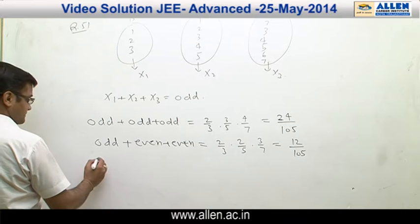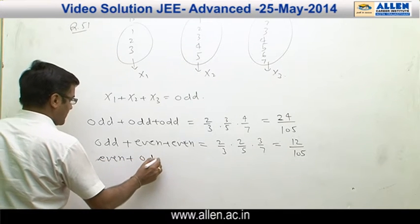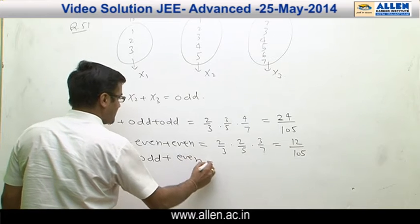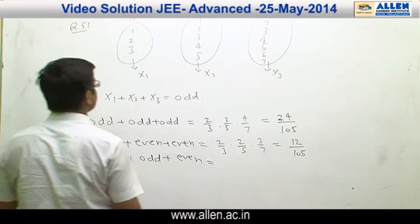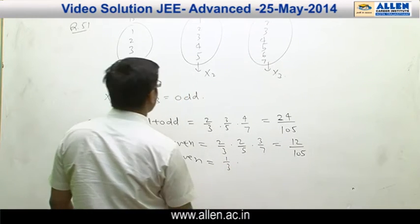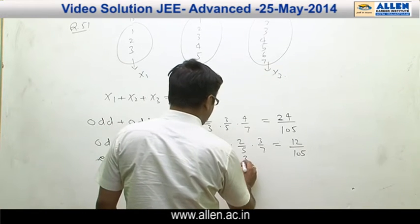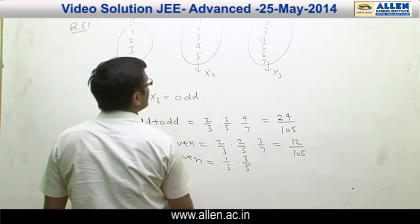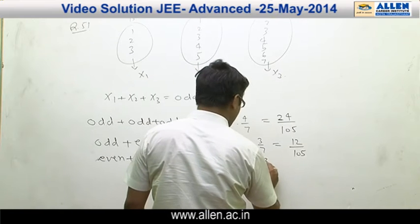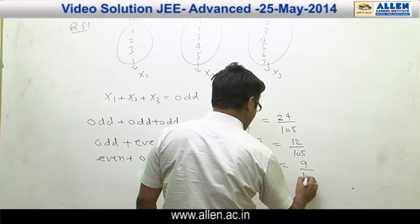Next case: if we pick an even number from box B1, odd from B2, and even from B3. Even from box B1: probability is 1/3, odd from box B2: probability is 3/5, and even from box B3: probability is 3/7. The probability becomes 9/105.